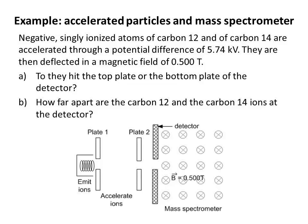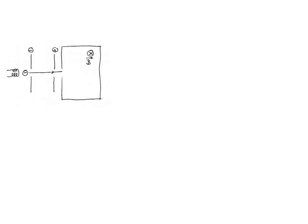Here's an example involving accelerated particles and a mass spectrometer. Negative, singly ionized atoms of carbon-12 and carbon-14 are accelerated through a potential difference of 5.74 kV. They're then deflected in a magnetic field of half a Tesla. Do they hit the top plate or the bottom plate of the detector? And how far apart are the carbon-12 and carbon-14 ions at the detector?